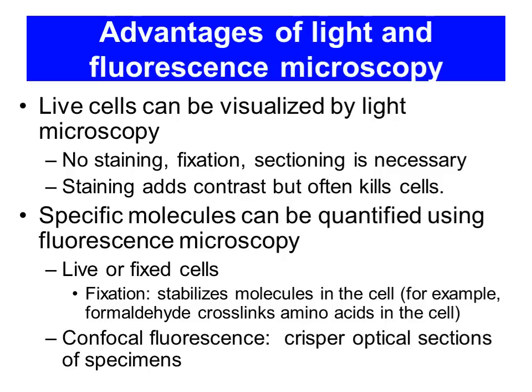These specific molecules can be used to quantify in fluorescent microscopy — you can look at live cells or fixed cells. Fixation can stabilize the cells so they don't decay and you can always get an accurate measurement. The last topic we won't have a chance to look at today is confocal fluorescence microscopy, in which you use a laser with a very specific wavelength to look through the cell — we'll take time to look at that in the next lecture.